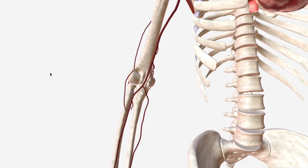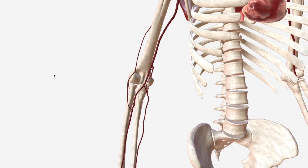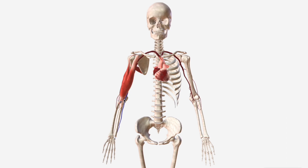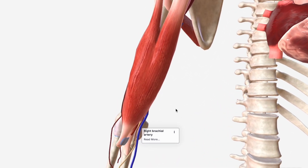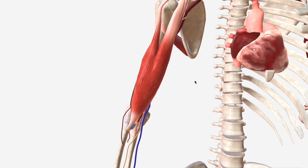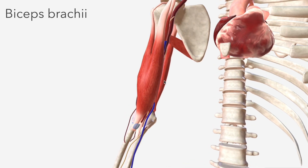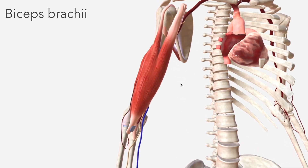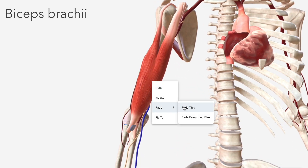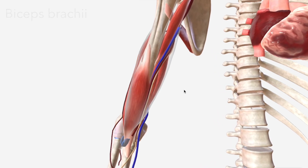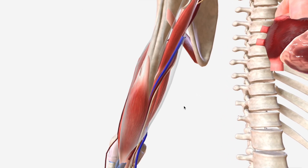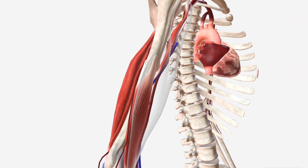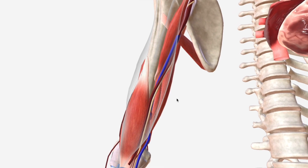Let's talk about the anatomical relations of the brachial artery. One of the main relations is the biceps brachii, which is very prominent on the anterior aspect of the upper arm. Let's make that transparent so we can map out the path of the brachial artery, medial to and posterior to that muscle.